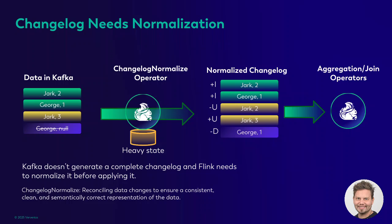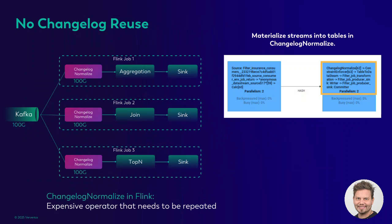Another issue is that Kafka itself doesn't produce a complete changelog. While consuming events, Flink needs to introduce a special operator to normalize the changelog, resulting in heavy state that needs to be stored and kept around. Furthermore, this generated changelog is not shareable across jobs. If you want to consume the same topic from multiple jobs running different operations, the changelog gets generated again and again, resulting in redundant storage costs and heavy state use.